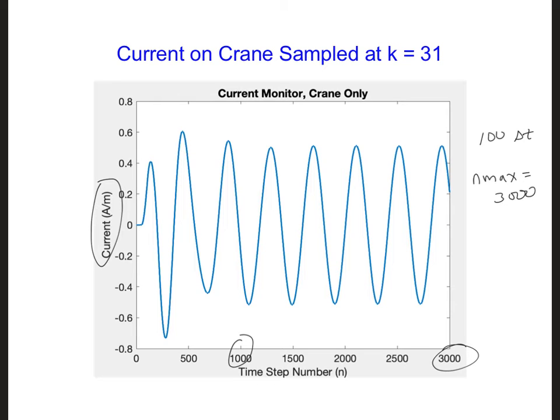We can see that the steady state amplitude is right around 0.5 amps per meter. This level of current could very well be a problem for the electronics on the crane.